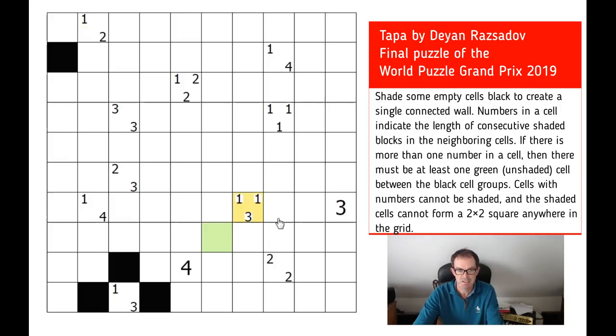That immediately allows Ken to look at this 1, 1, 3 combination. 1 plus 1 plus 3, that's fine. Nothing terribly complicated there. But because we know that each of these clues must be separated by a green square, there must be three spaces around these black squares as well. So 3 plus 5 is 8 and there are exactly 8 squares around this clue.